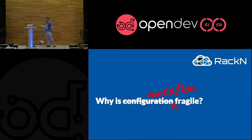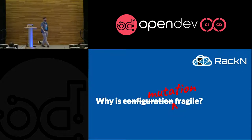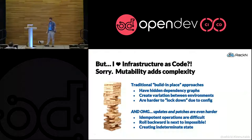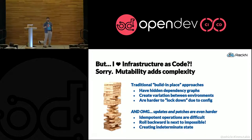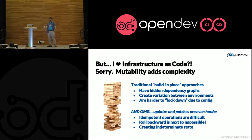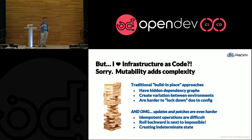I'm doing a lot of work in the edge infrastructure space. A 1% failure rate in an edge deployment is 100 sites that you have to visit. What we talk about a lot is infrastructure as code. However, all the mutability of doing this configuration makes things really hard. We have traditional in-place approaches, but those have dependency graphs that break things. We have variation in the environment that makes it very hard to create a standard deployment process. And it's even harder to lock down that configuration.